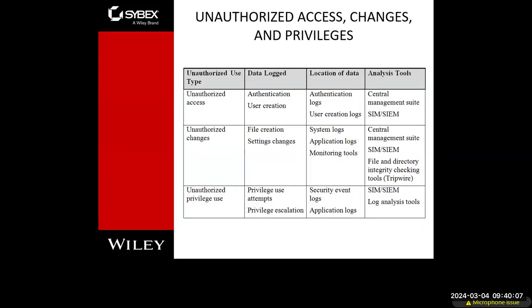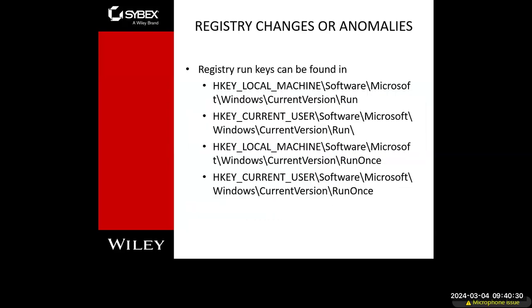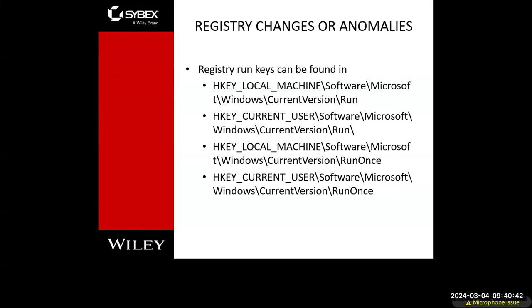We want to prevent unauthorized access, changes, and privileges. They list out different types of data that is logged, the location, and the analysis tools that would be used. Another type of system you can monitor for changes and anomalies is your Windows registry. If a bad actor is going to plant a backdoor on your system, it will have to have some sort of registry entry. We can monitor new entries or changes to the registry, especially anything related to group policy objects — that can be a red flag.